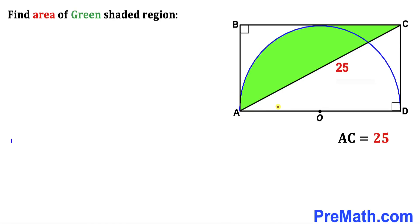Welcome to PreMath. In this video we have got this semicircle inscribed in a rectangle ABCD. As you can see in this diagram, this diagonal AC is 25 units and now we are going to calculate the area of this green shaded region.